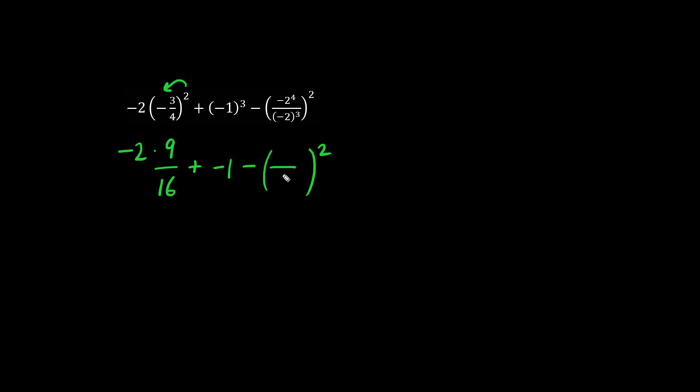What's negative 2 to the 4 on the numerator? We have a negative number, and 2 to the 4 is 16. Now the denominator is negative 2 cubed, which is negative 8.